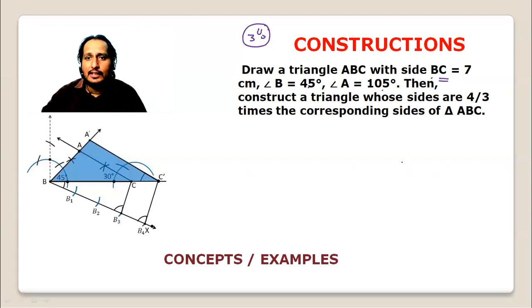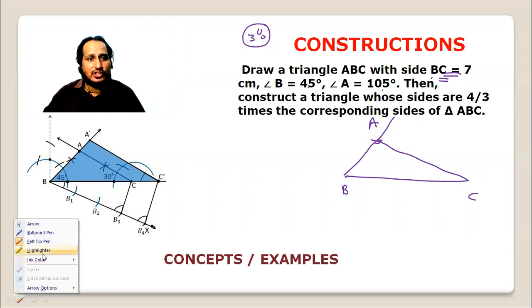First I'll draw side BC. Then at B I'll make angle 45° and at C angle 30°. Simply draw the triangle. I think I don't have any challenge here.